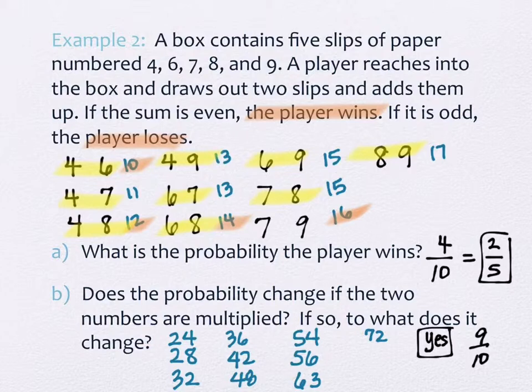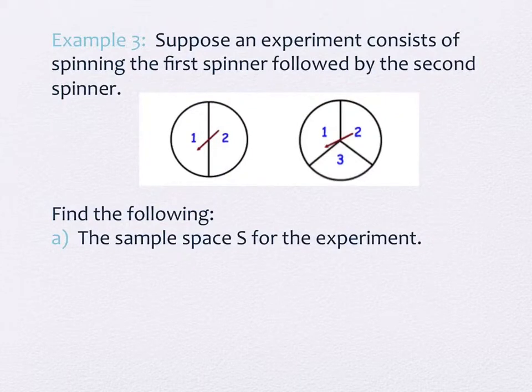We should do another one, and then this will be our last one for today, example three. Suppose an experiment consists of spinning the first spinner followed by the second spinner. So the first spinner has one and two on it, and they're equal, equally distributed. And then one, two, and three, and at least it should lend you to believe that they're equally distributed.